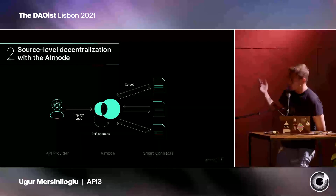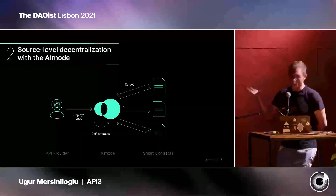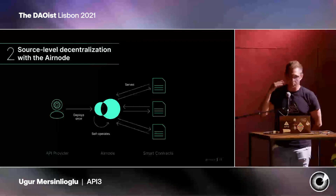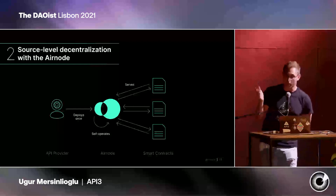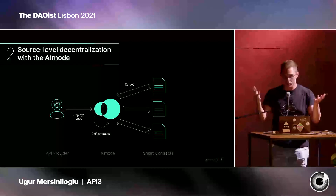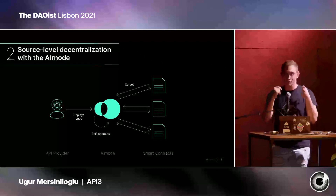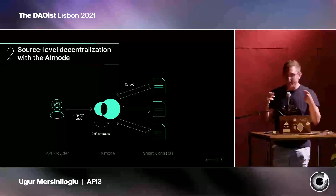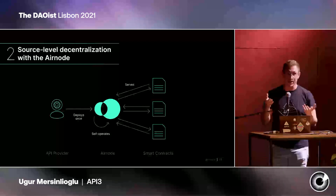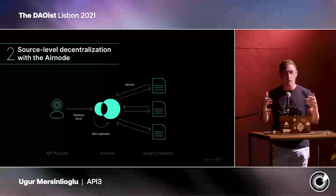This is all made possible by our Oracle solution, which is called Airnode. Airnode is set up in 10 minutes by the API provider on their existing infrastructure, without handling cryptocurrencies, without knowing anything about blockchains. This solution allows us to decentralize the source level of data.